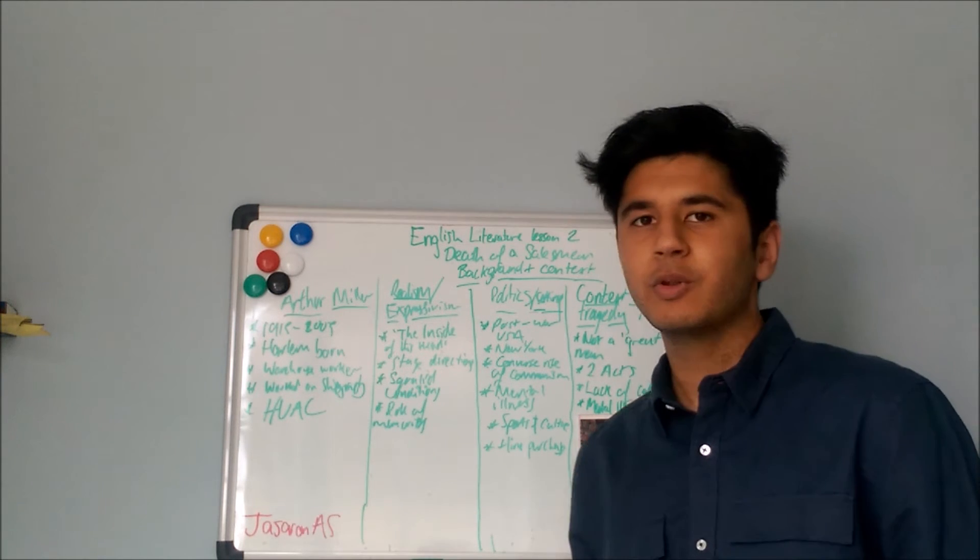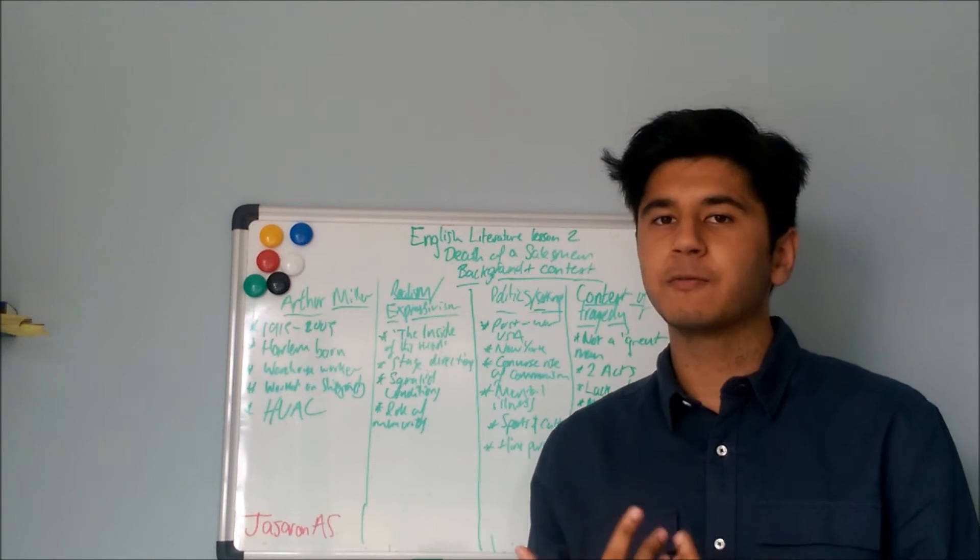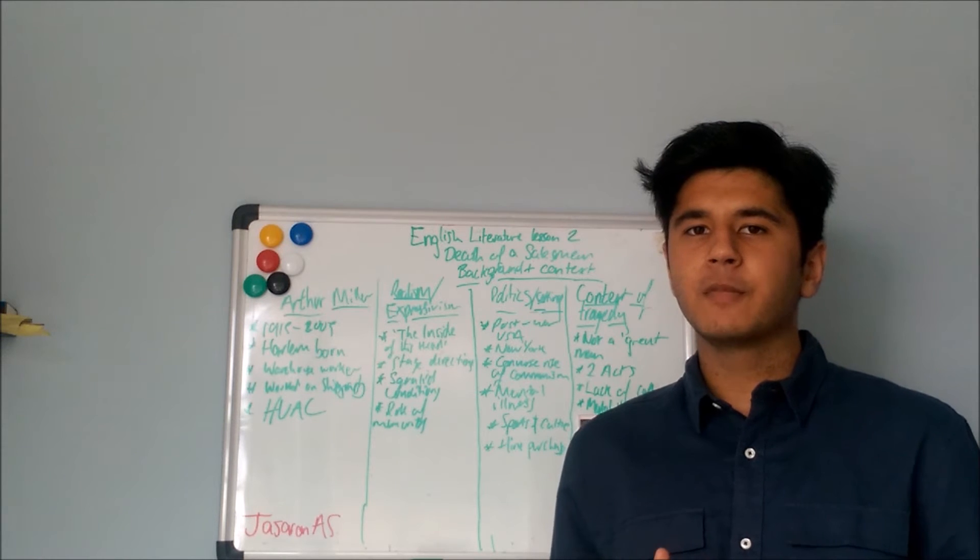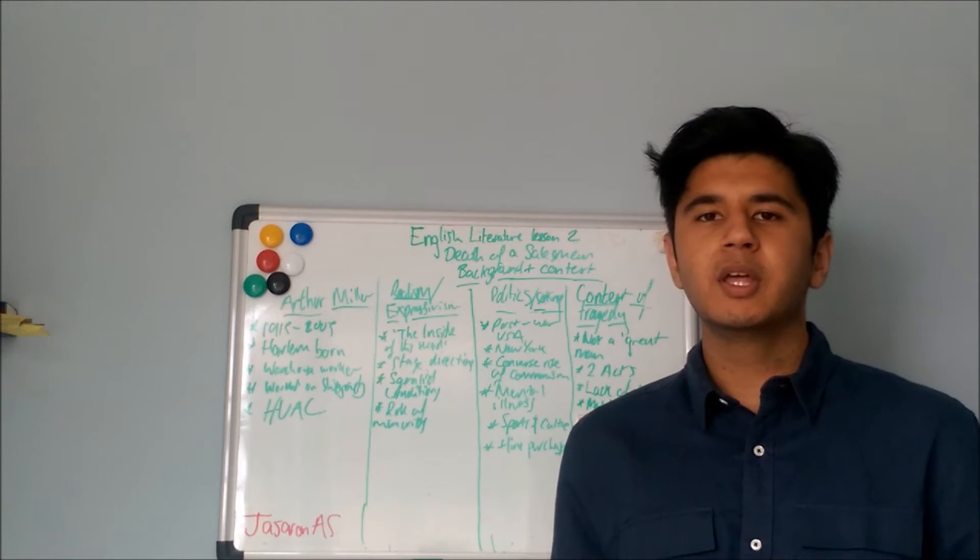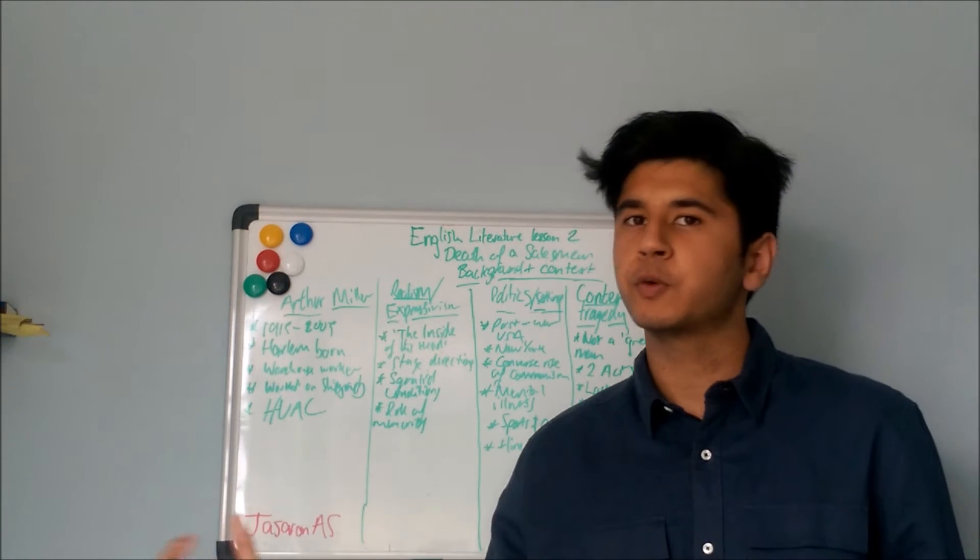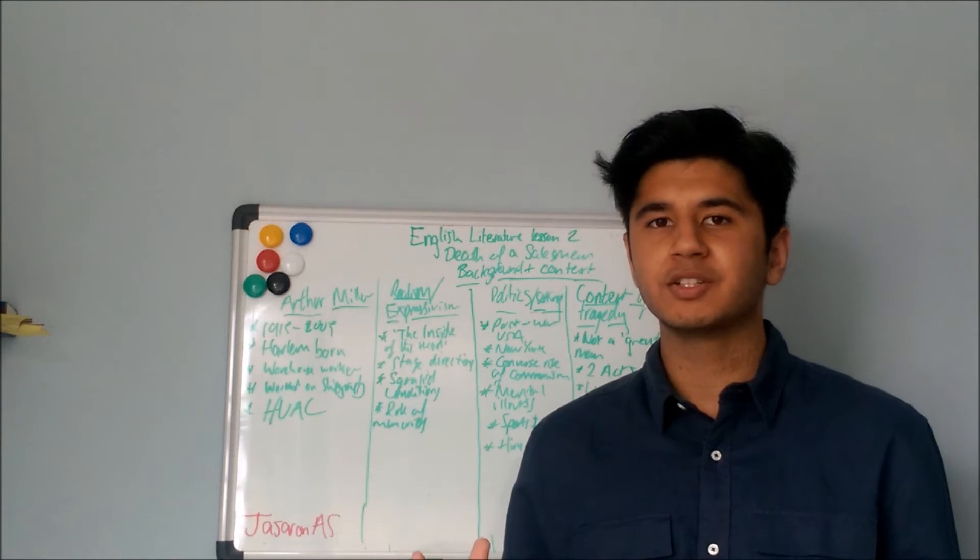Expressivism is all about expressing someone's inner thoughts and emotions. This can be done through a variety of ways but the way it's done in Death of a Salesman is by having people do things like walk through walls and through time travel essentially.